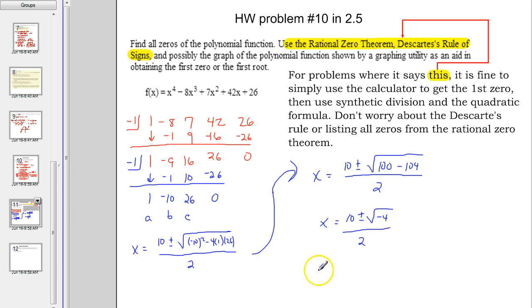And the square root of negative 4 is 2i. So imaginary.